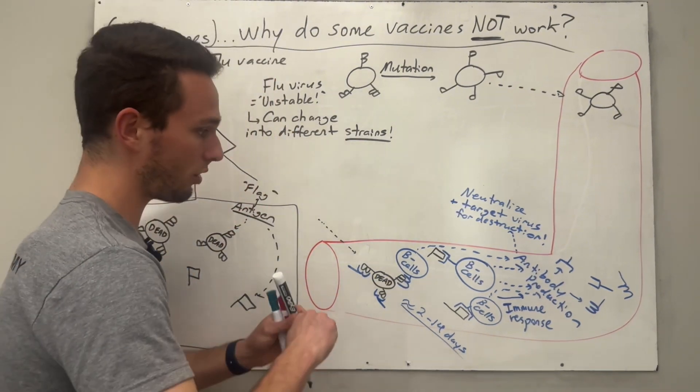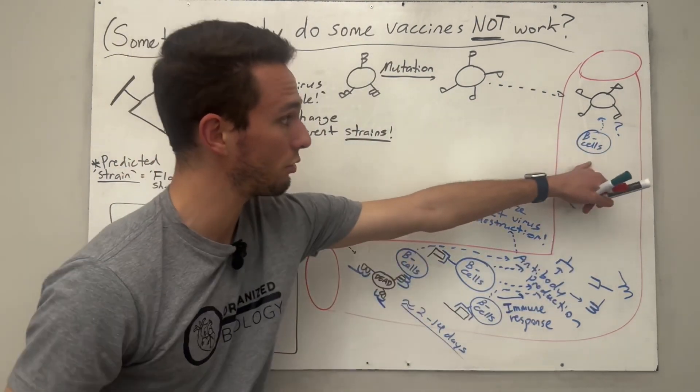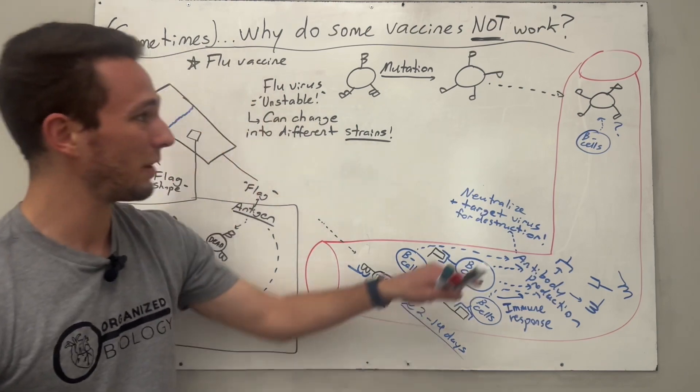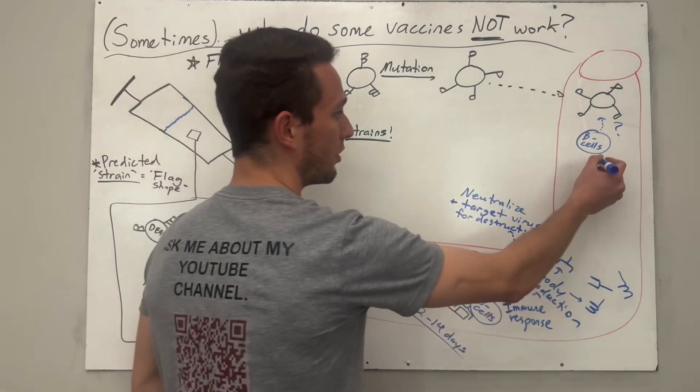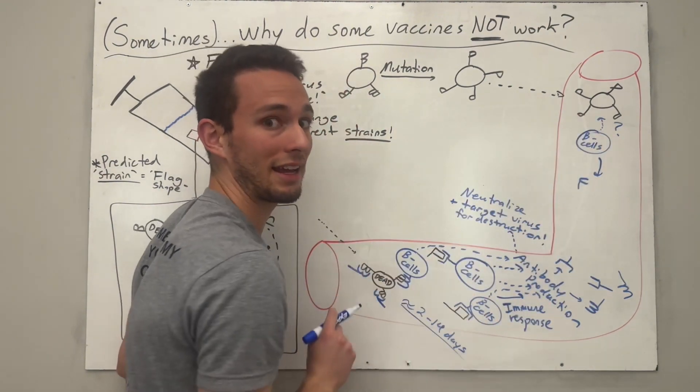So in that case, your B cells when they come into contact with this guy, they've never seen him before, so they have to go through that same whole process that takes 2 to 14 days to actually learn how to eventually produce those antibodies to make them look like something like this, so they can actually attach to that antigen.